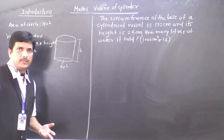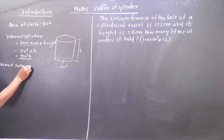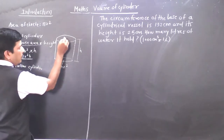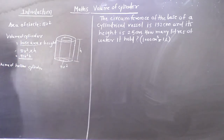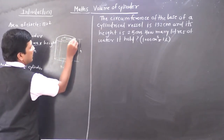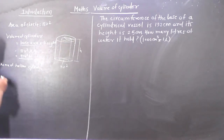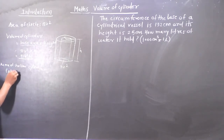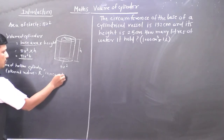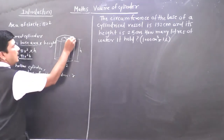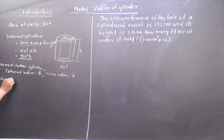Now one more thing we need to see — that is a hollow cylinder. In that case, in this figure, there is one more cylinder inside — an inner cylinder. So there are two types of radius: one is external radius and the other is internal radius. External radius we denote by capital R, and the inner radius we denote by small r.